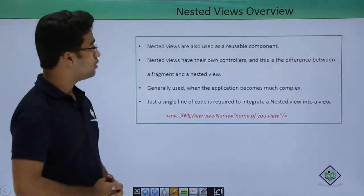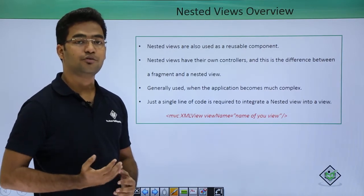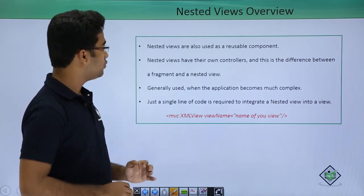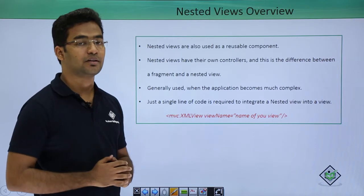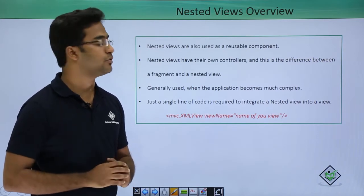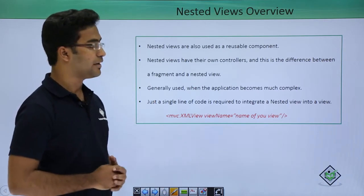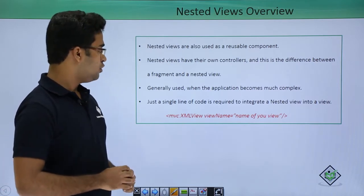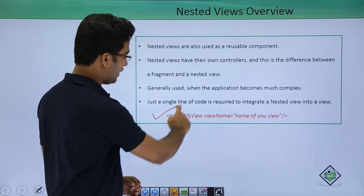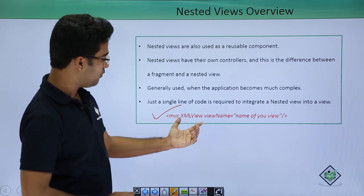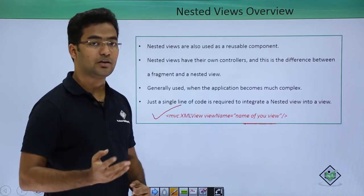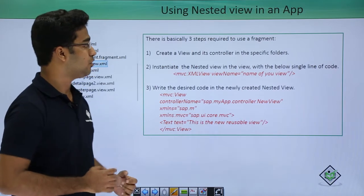Now moving on to nested views. Nested views are also used for reusable purposes — we can code in nested views and reuse them multiple times. The basic difference between nested views and fragments is that nested views have their own controllers, whereas fragments do not. Nested views are generally used when the application becomes much more complex. To define a nested view, we write the MVC XML view tag with the view name as the path of the view, similar to how we referenced fragments.